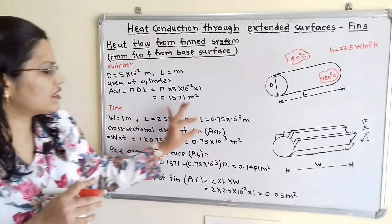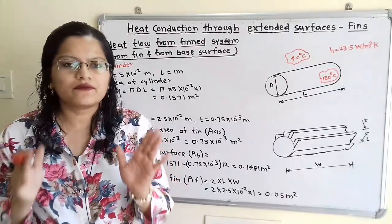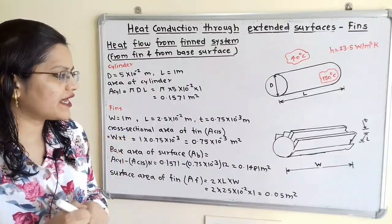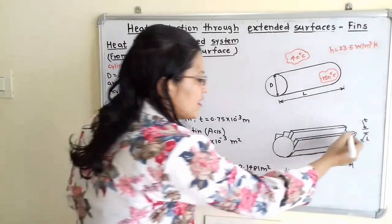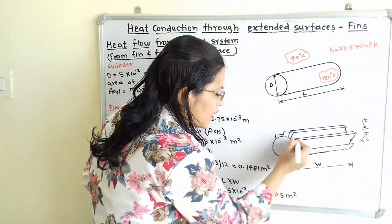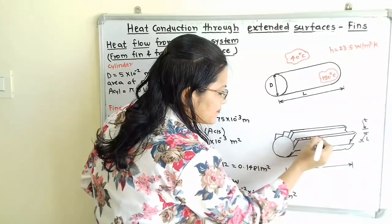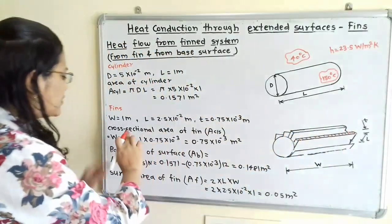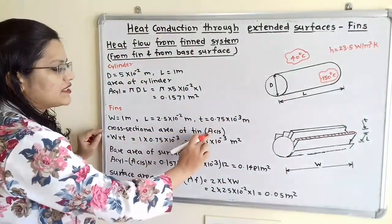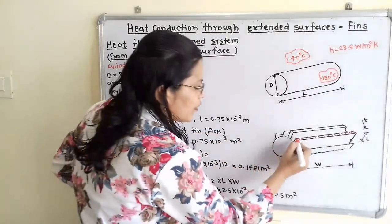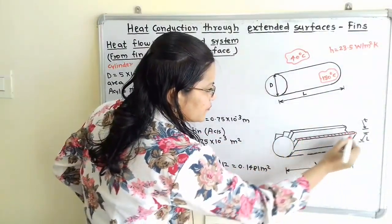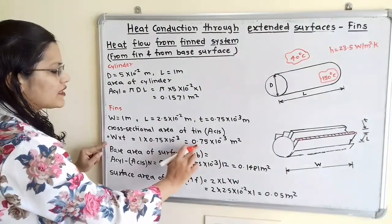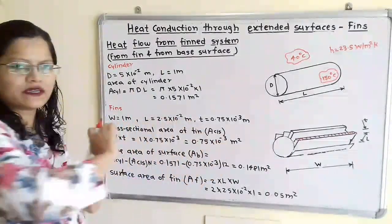We will calculate the cross-sectional area of the fin. The cross-sectional area is highlighted — it is the combination of thickness and width of the fin, which is a rectangular shape. So, A_cs = W × t = 1 × 0.75 × 10⁻³ = 0.75 × 10⁻³ m².